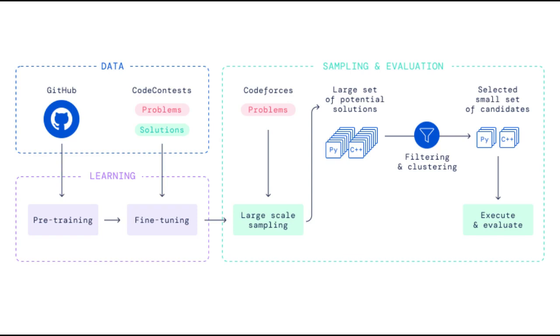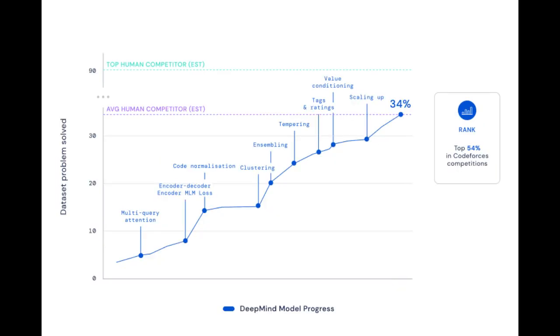With the permission of CodeForces, DeepMind evaluated AlphaCode by simulating participation in 10 recent contests. The impressive work of the competitive programming community has created a domain where it is not possible to solve problems through shortcuts like duplicating solutions seen before or trying out every potentially-related algorithm. Instead, the model must create novel and interesting solutions.